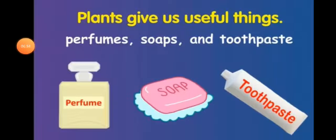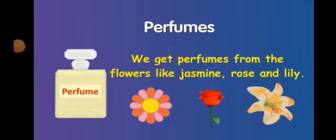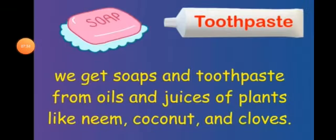Plants also give us useful things such as perfume, body spray, soaps, and toothpaste — we get all these things from plants. Perfume gives fragrance to our body. We get perfumes from flowers like jasmine, rose, and lily. We get toothpaste and soap from the oil and juices of plants like neem and coconut.